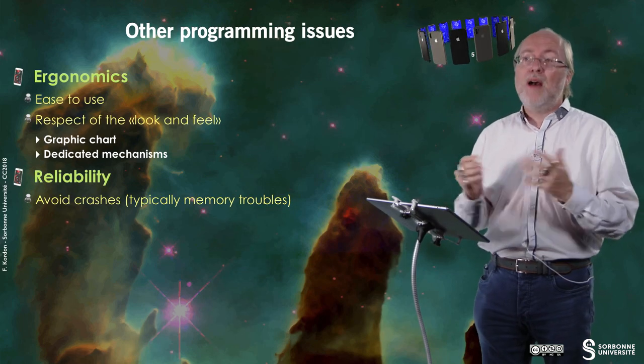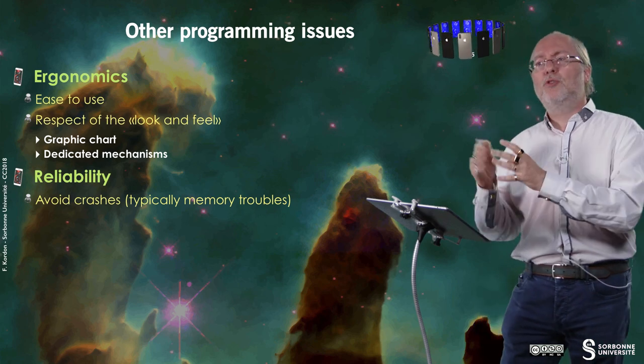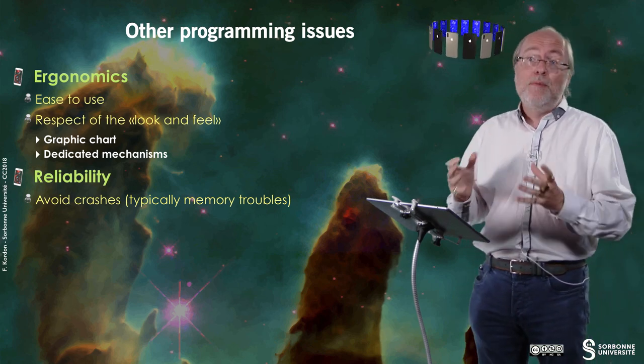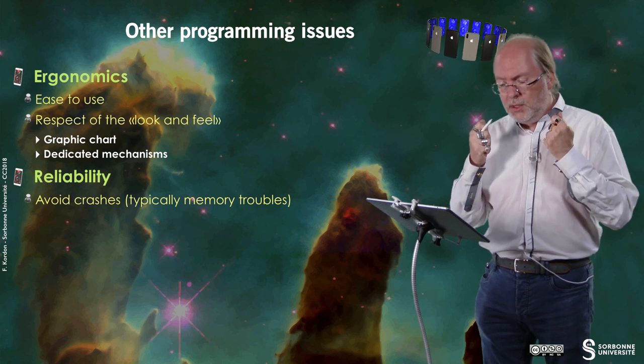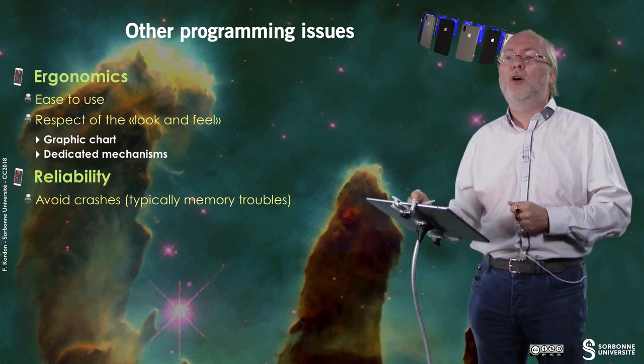You also have to deal with reliability. In Steve Jobs' mind, when somebody installs a CrashMe application on his phone and if his phone is crashing, he doesn't wonder why — the problem comes from the phone. So one of the objectives of the Apple process is to avoid applications that crash. And typically, you may have problems with memory. Even with automatic reference counting, you may have trouble with memory. So you have to be sure that your application is reliable.